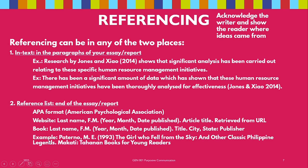In this example, we have a book reference list. 'Paterno, M.E., 1993' — that's the date published. Then the title: 'The Girl Who Fell from the Sky and Other Classic Philippine Legends.' Then the state or city where the book was published, and finally the name of the publishing house, which is Tahan Books for Young Readers. That's how you write your reference list following the APA format.